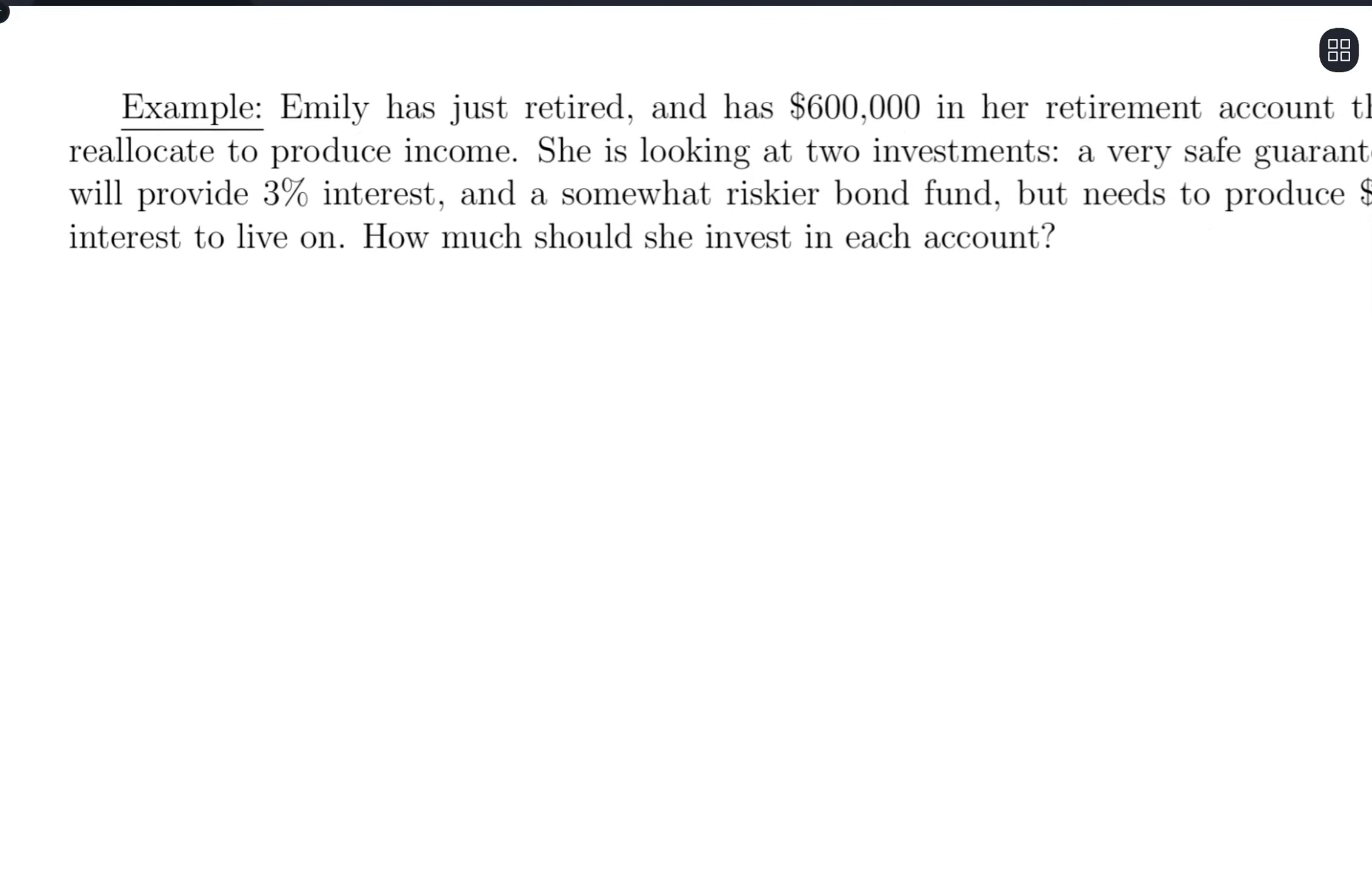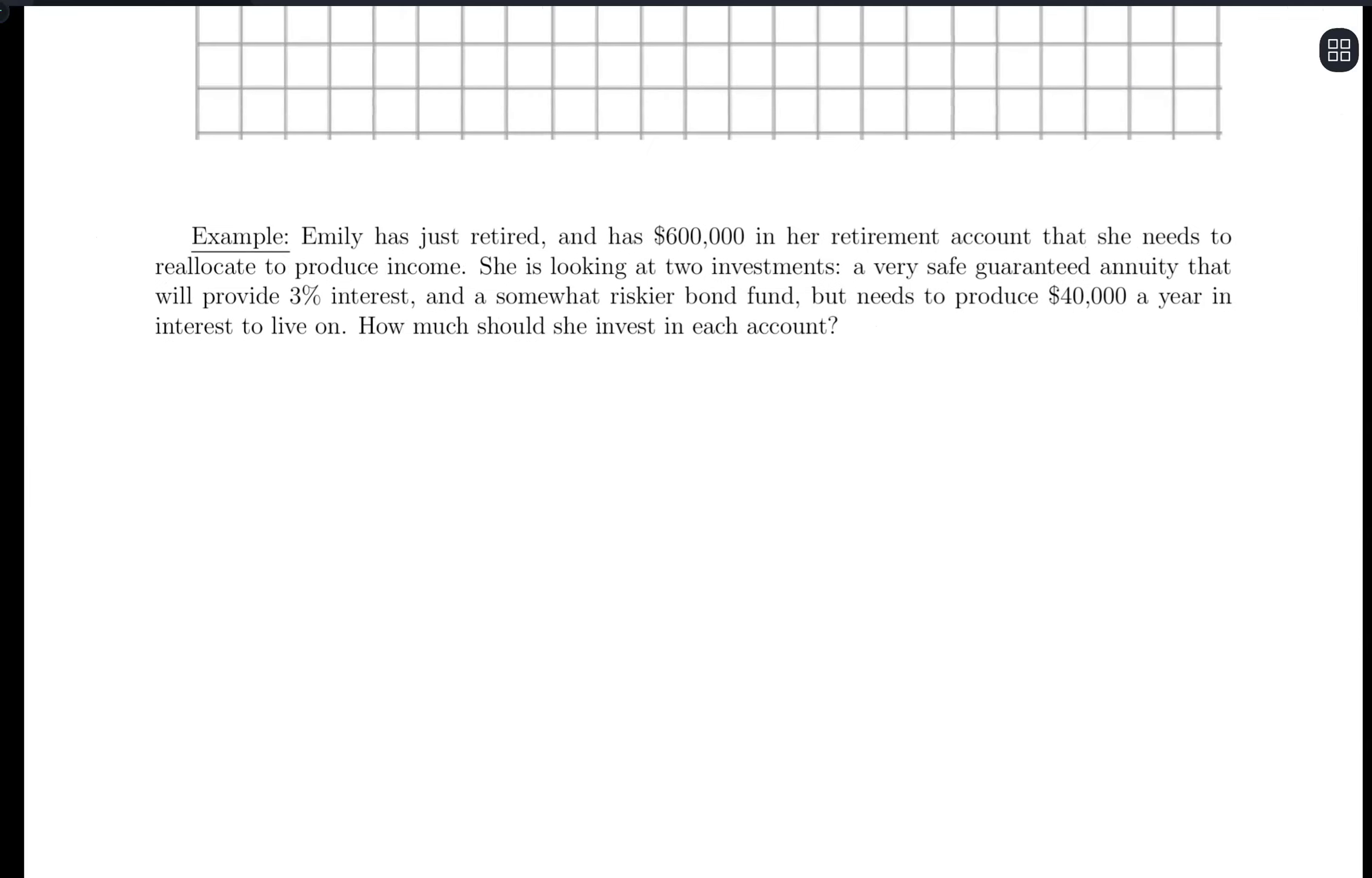All right, let's do another example here. So Emily has just retired and has $600,000 in her retirement account that she needs to reallocate to produce income. So she's looking at two investments, and one is a very safe guaranteed annuity that will provide 3% interest and a somewhat riskier bond fund. I'm missing some information there. Sorry, missing that information. That should be 7% interest.